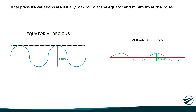These diurnal pressure variations are usually maximum at the equator, where the difference between high and low pressure is around 3 hectopascals, and minimum at the poles, where the typical variation is around 0.3 hectopascals. However, the atmospheric pressure at a certain location not only depends on this daily barometric tide, but is also greatly influenced by larger global-scale pressure systems.